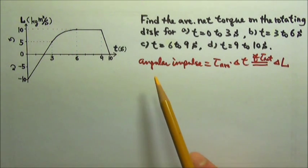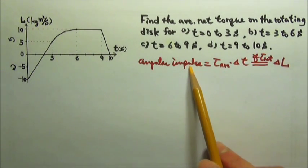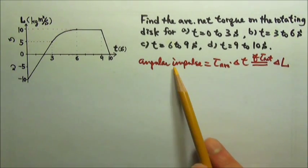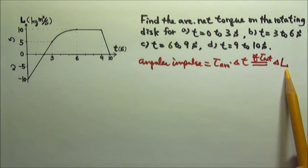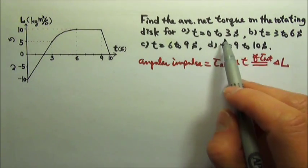For this problem, it can be very convenient for us to use the angular impulse equation. Angular impulse equals the average torque times time. And if this is the net torque, then the angular impulse would also equal the change in angular momentum.